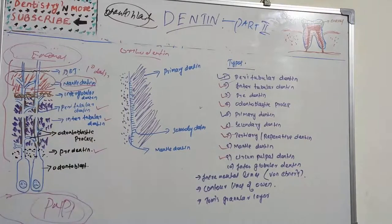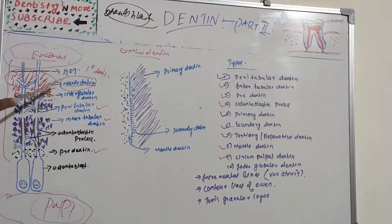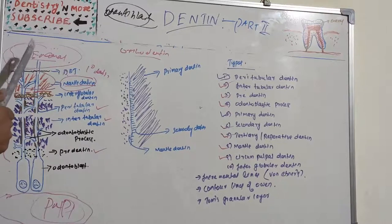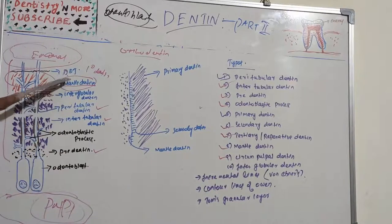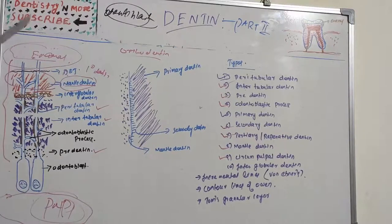Mantle dentine is the first layer of primary dentine to be deposited. It is the oldest dentine, produced adjacent to the enamel, and can be recognized by characteristic thick fan-shaped collagen fibers. These fibers run perpendicular to the DEJ. Circumpulpal dentine is formed after the mantle dentine layer has been deposited. It constitutes the major part of primary and secondary dentine. Hydroxyapatite crystals are deposited on the surface and within the fibrils, increasing mineral content as mineralization proceeds.